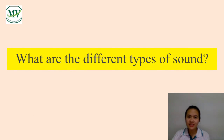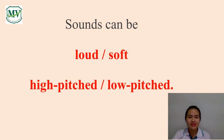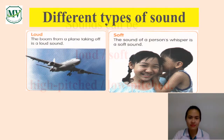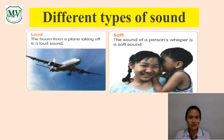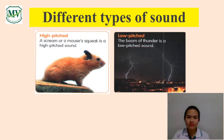Do you know what are the different types of sounds? Sounds can be loud, soft, high pitch, or low pitch. The boom from a plane taking off is a loud sound. The sound of a person's whisper is a soft sound. A scream or a mouse squeak is a high pitch sound. The boom of thunder is a low pitch sound.